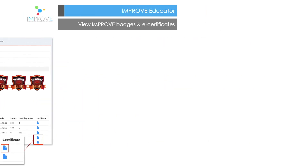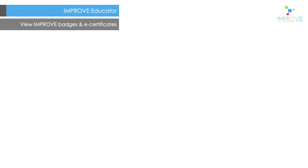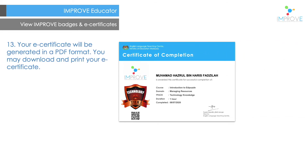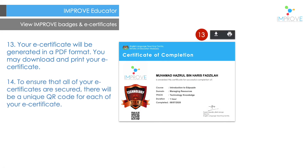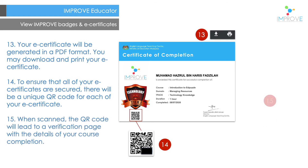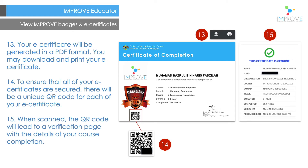Your e-certificate will be generated in a PDF format. You may download and print your e-certificate. Each e-certificate will have a unique QR code. When scanned, the QR code will lead to a verification page with the details of your course completion.